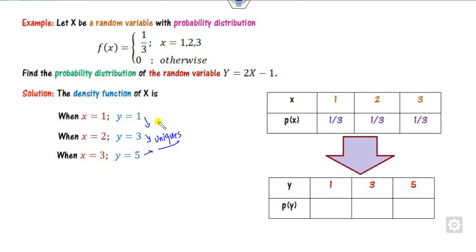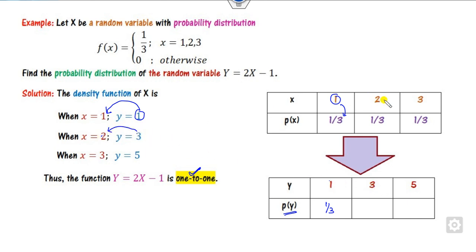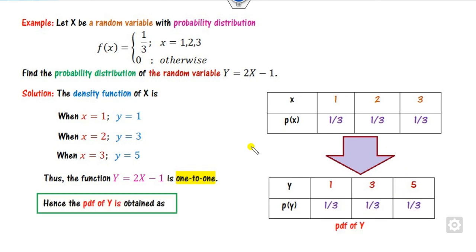Since there is no repetition in the values of y, we can say this function is 1-to-1. Whenever there is a repetition of values, then it is not 1-to-1. Once you confirm it is 1-to-1, finding the probability mass function is very simple: corresponding to y = 1, the value of x is 1, so the PMF is the PMF of x at 1. Corresponding to y = 3, x = 2, so the PMF is 1/3. Similarly for y = 5, x = 3, the answer is 1/3. In this case all three probabilities are the same, so there is no difference.